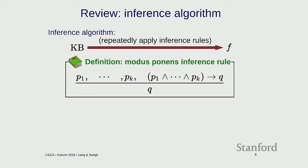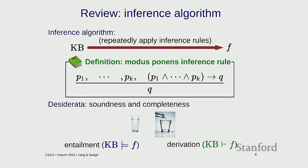The question is: what does the inference rule have to do with semantics? These are just symbol manipulation. To anchor this in semantics, we have soundness and completeness. Entailment is a relationship between a knowledge base and a formula: the models of KB must be a subset of models of f. Derivation is symbol manipulation. Soundness means derived formulas are always entailed; completeness means you can derive all entailed formulas — like the water glass analogy where you stay within the glass but don't spill over.